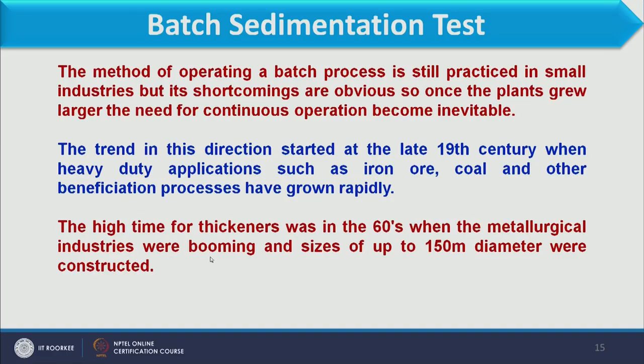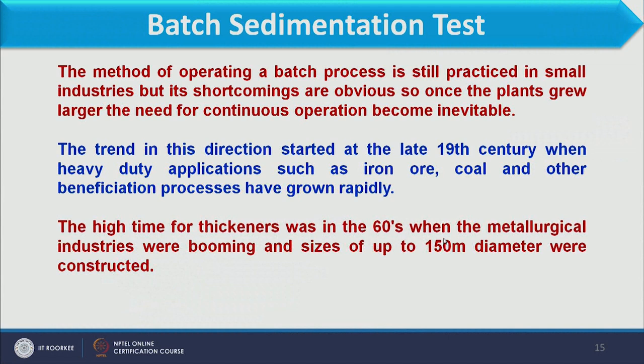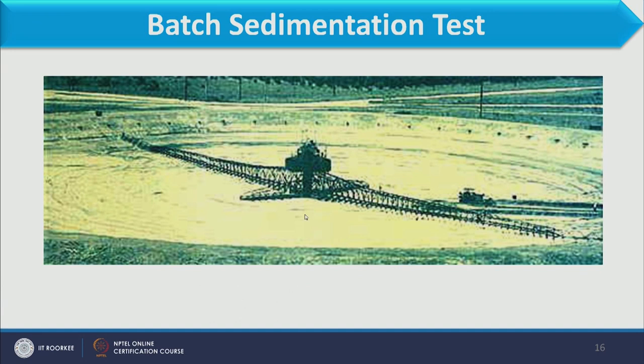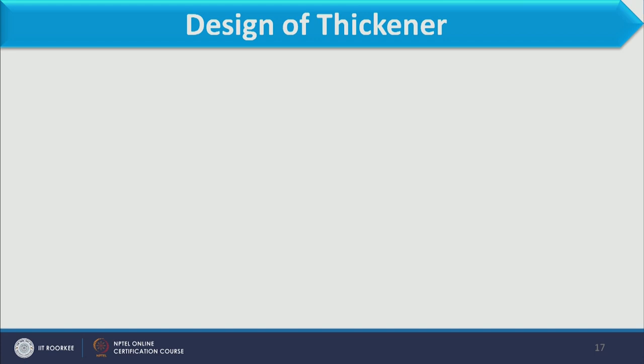The high era for thickeners was in the 1960s when metallurgical industries were booming, and thickener diameters of up to 150 meters were constructed. You can observe from the figure of the sedimenter shown here how huge the equipment is. We must design it very carefully, as slightly over-designing the tank will result in significant financial losses for the industry.